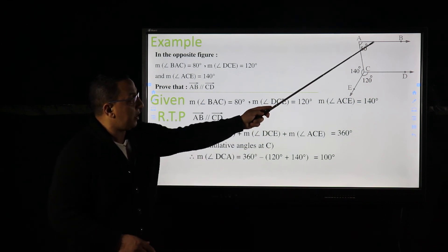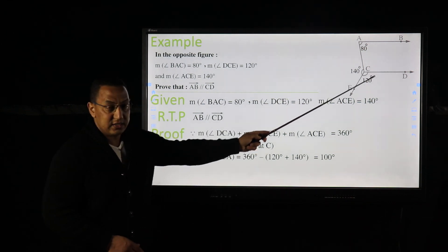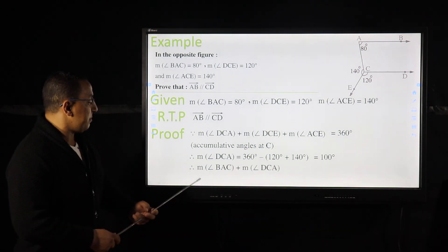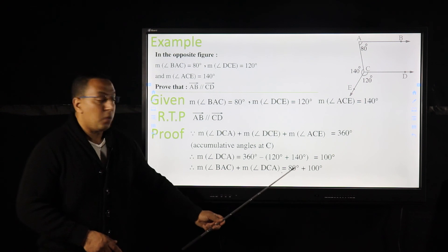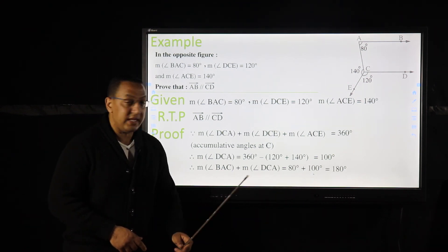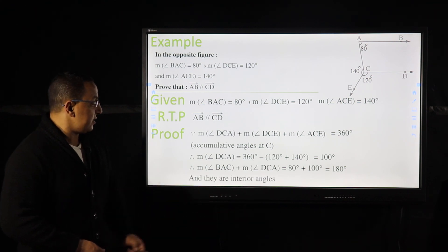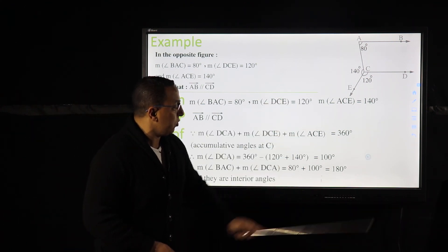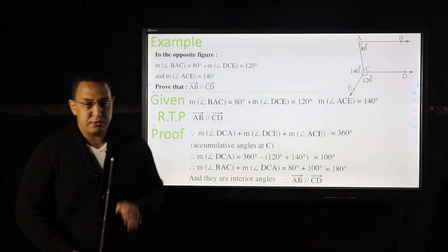Now, adding 80 plus 100 degrees: BAC plus ACD equals 80 plus 100, which equals 180 degrees. They are interior angles, therefore AB is parallel to CD. This is the required to be proved.